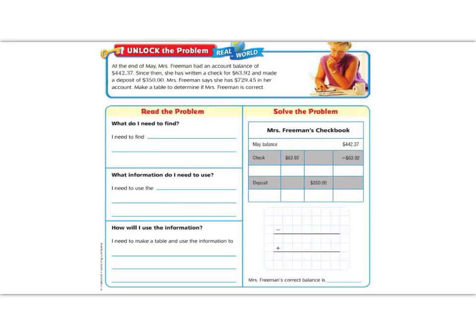Let's begin by reading the Unlock the Problem. It says, at the end of May, Ms. Freeman had an account balance of $442.37. That means that's how much money she had in her bank. Since then, she has written a check for $63.92. When we write a check, that means money is going out. She spent that money, so we need to subtract.